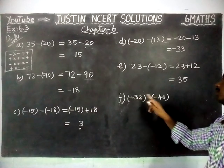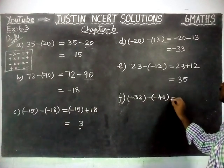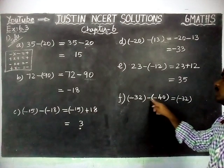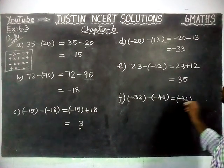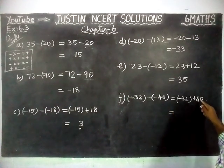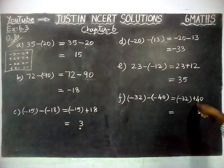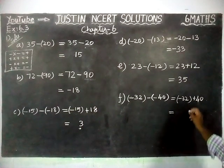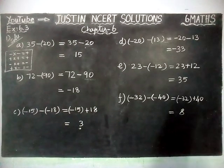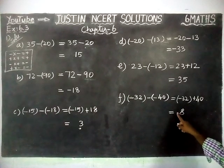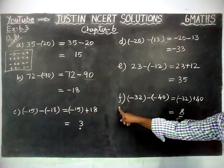The last question: minus 32 minus minus 40 equals minus 32. Minus of minus — minus into minus equals plus — so plus 40 is there. Now one number is negative and the other is positive; when signs are different we find the difference. 40 minus 32 equals 8. The difference is 8, and 40 is the greatest number. In front of the greatest number a plus sign is there, so plus 8 is the correct answer.